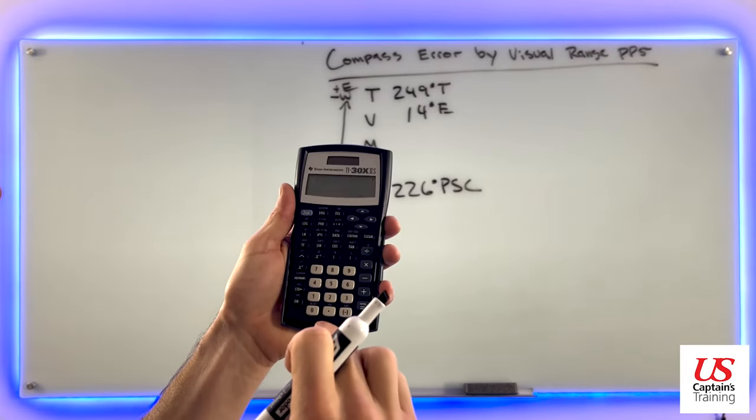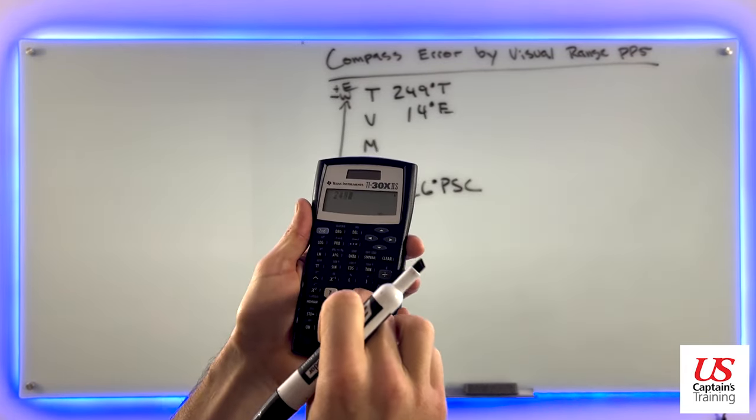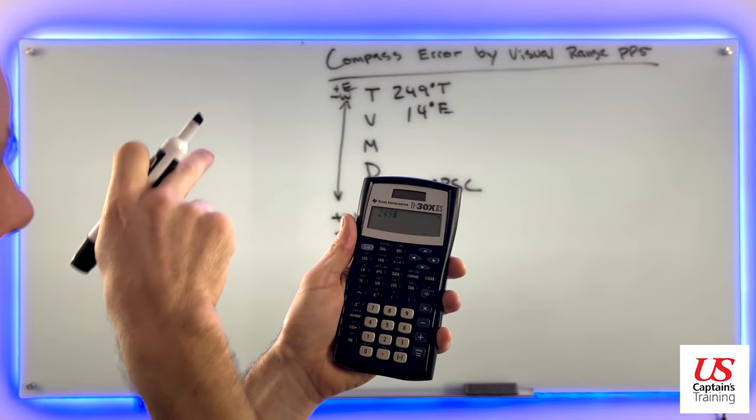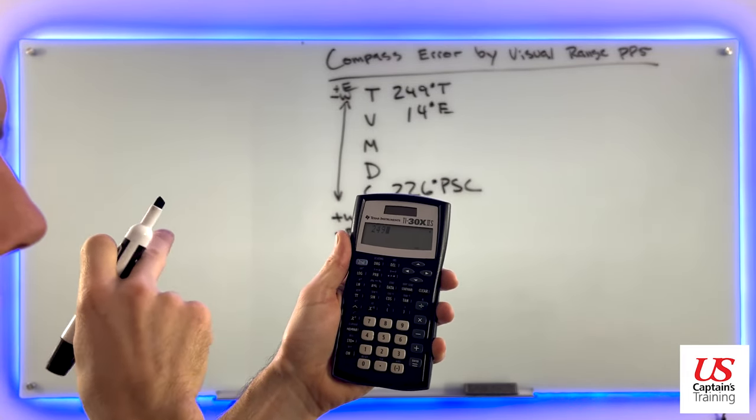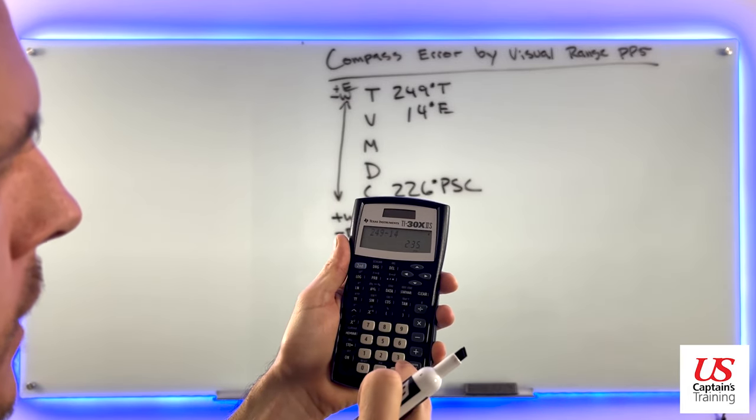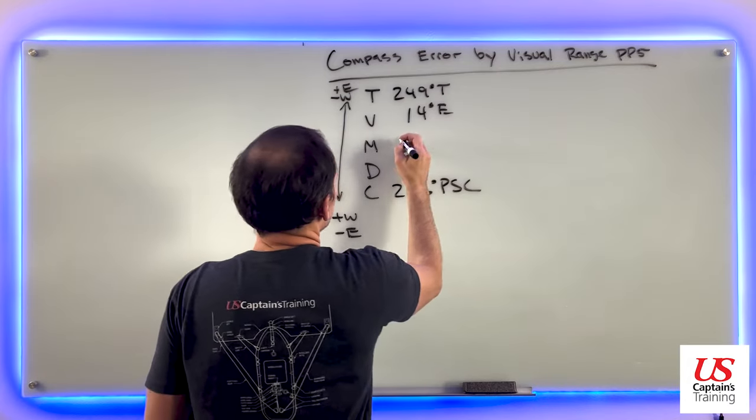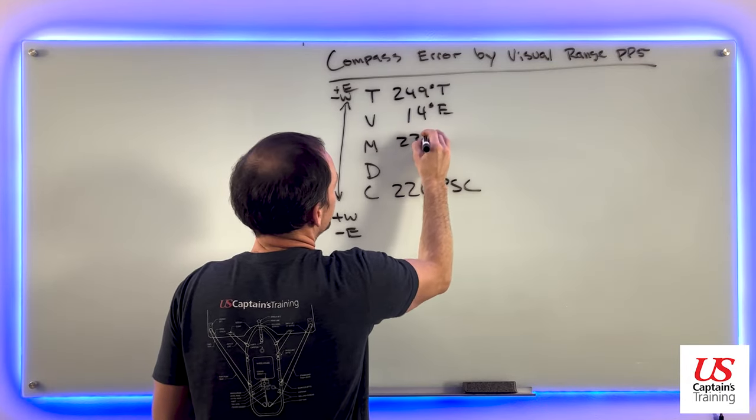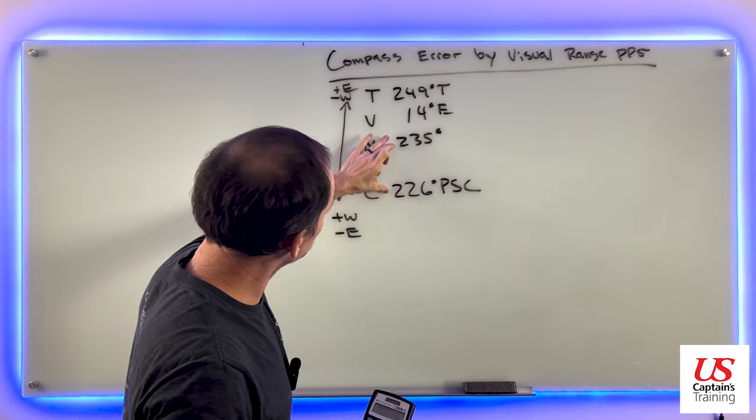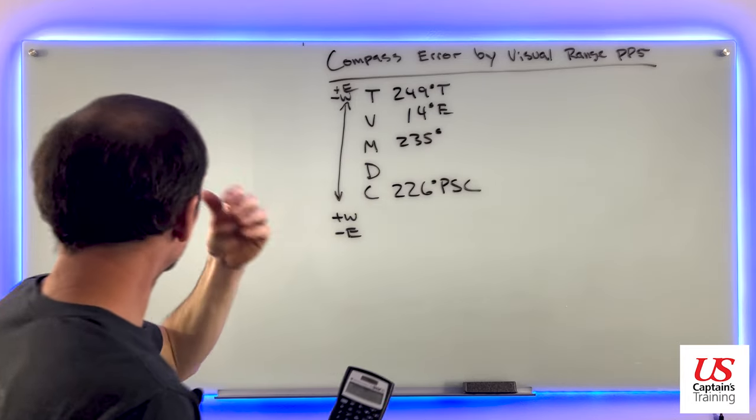We say 249 true, 249 true, and 14 east. If we're going down towards magnetic, we subtract east. Minus 14 east equals 235. 235 degrees magnetic. Okay, so what is the difference between these two?